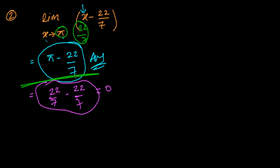Always remember: any time you get a symbol in the limit, don't try to substitute a numerical value for that symbol. For example, if you get x tends to e, don't try to put the numerical value of e — just write e as a symbol.